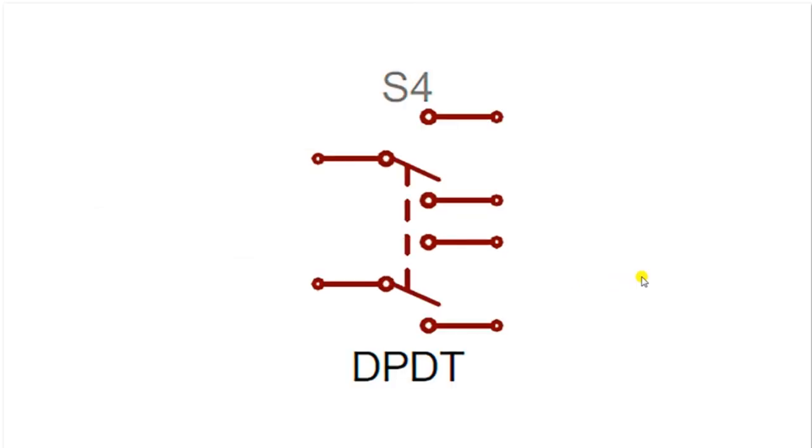This is a double pole double throw switch. And this dashed line signifies that these are electrically isolated but mechanically connected. So when you throw the switch, both of these lever things move to the other pole. And so these are your poles over here. And these are where the input signal would come through. And then you could switch between two different outputs. And so that's what a double pole double throw switch looks like in a schematic symbol form.